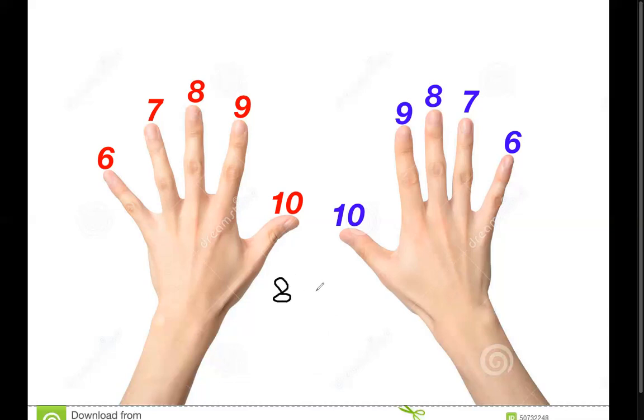So how about 8 times 7? Here we're going to close that up to 8. And here we're going to close up to 7. Now, the closed fingers, you count them by 10. So you have 10, 20, 30, 40, 50. And the numbers that are open, you multiply this hand by this hand. So you have 2 times 3 is 6. And you add 6 right there and you get 56.